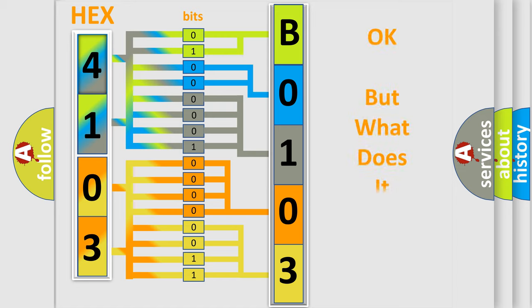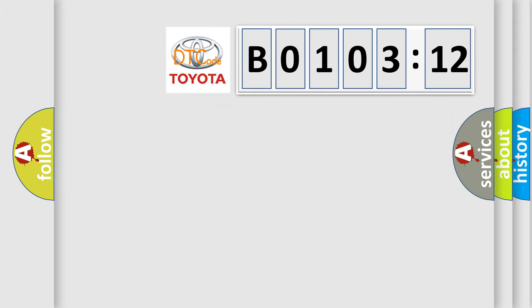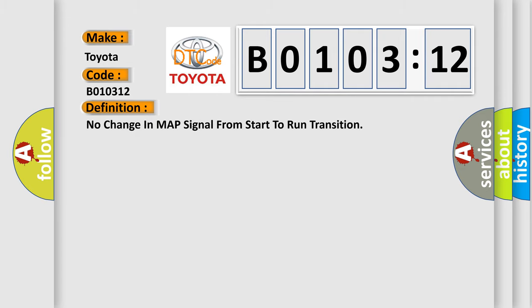We now know in what way the diagnostic tool translates the received information into a more comprehensible format. The number itself does not make sense to us if we cannot assign information about it to what it actually expresses. So, what does the diagnostic trouble code B010312 interpret specifically, Toyota car manufacturer?